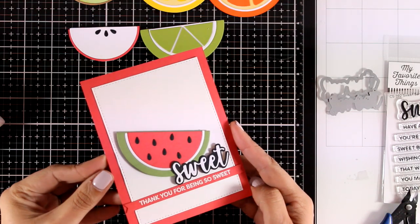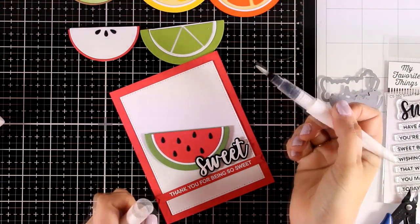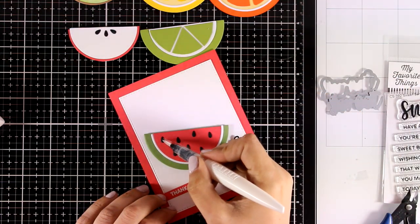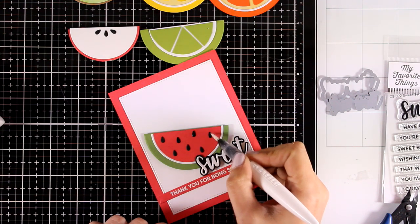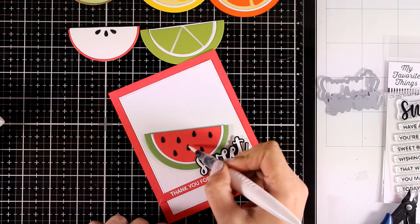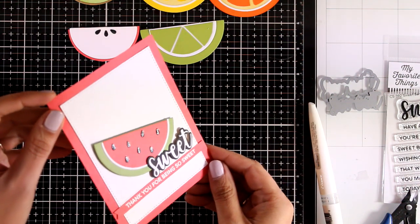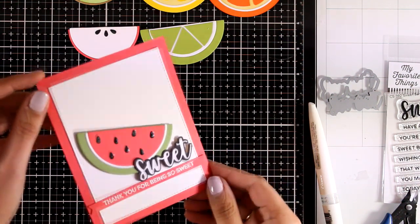As a finishing touch, I'm adding some shine on the seeds with my Aqua Shimmer Nuvo pen. It would look great if you used glossy accents as well. Here it is, all ready to go. All I need to do is stick this panel on top of a pre-folded card that's 4.25 by 5.5 inches.